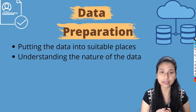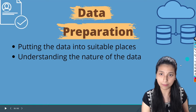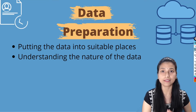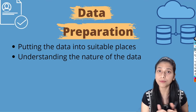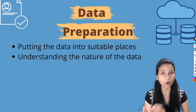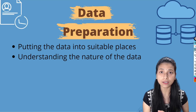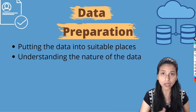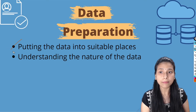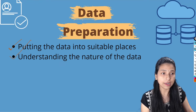The second step inside the machine learning life cycle is data preparation. Here we put the data into suitable places — maybe databases such as MySQL, MongoDB, or Cassandra, or it could be some files or folders. After this, the next step is understanding the nature of the data: how many rows, how many columns are present inside your dataset. One more thing to keep in mind is that the volume of data should be sufficient enough so that our model can be trained on top of that dataset.